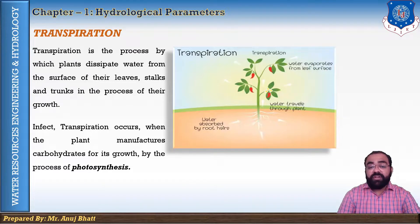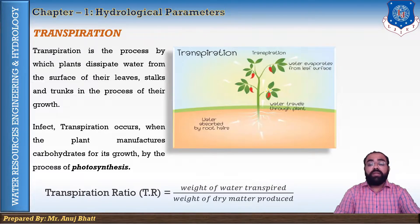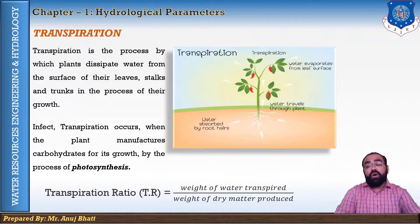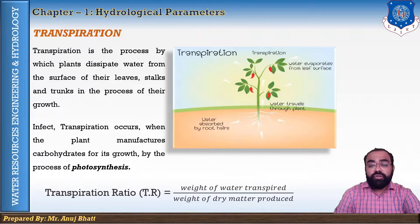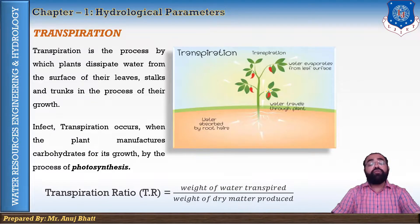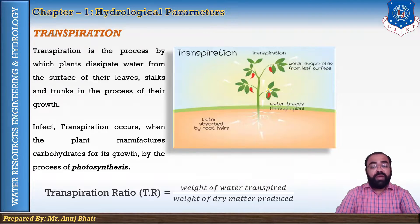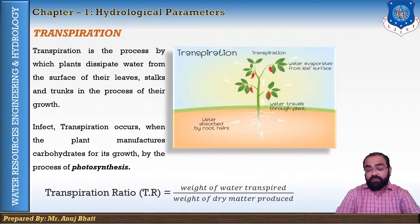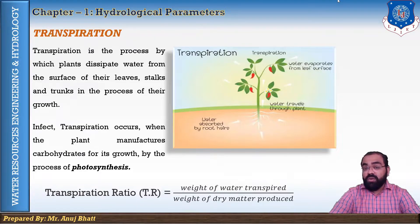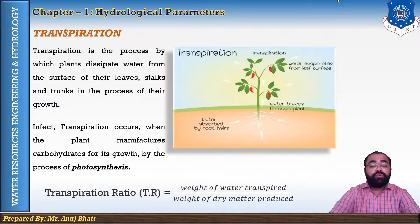As air enters the leaf, water escapes through the stomata. The transpiration ratio is defined as the weight of water transpired to the weight of dry matter produced. This transpiration ratio for most crops ranges from 300 to 800.